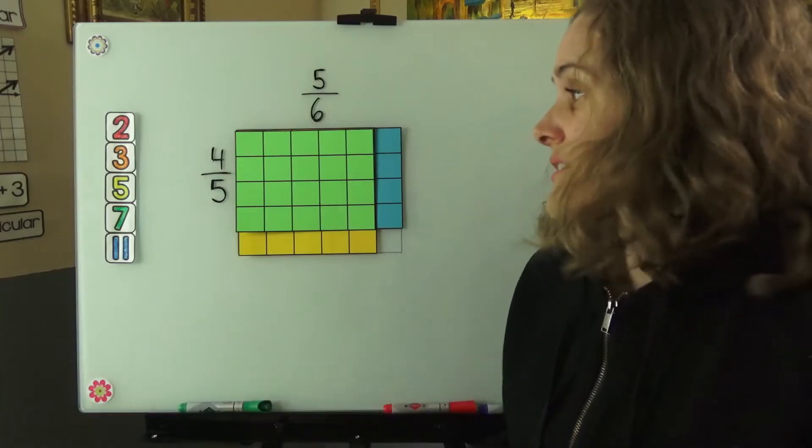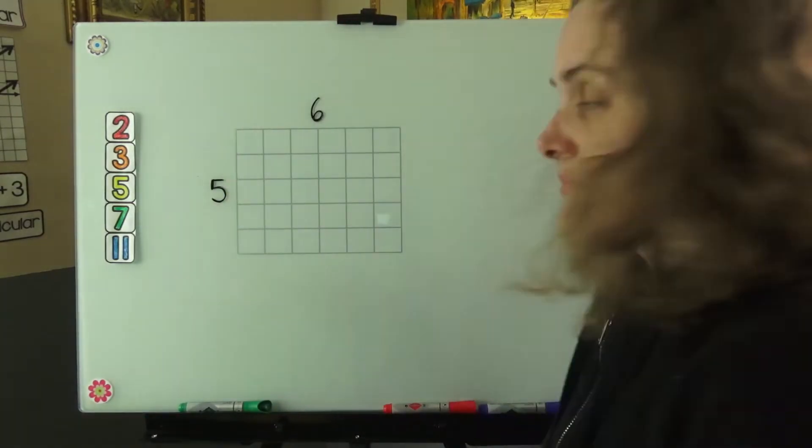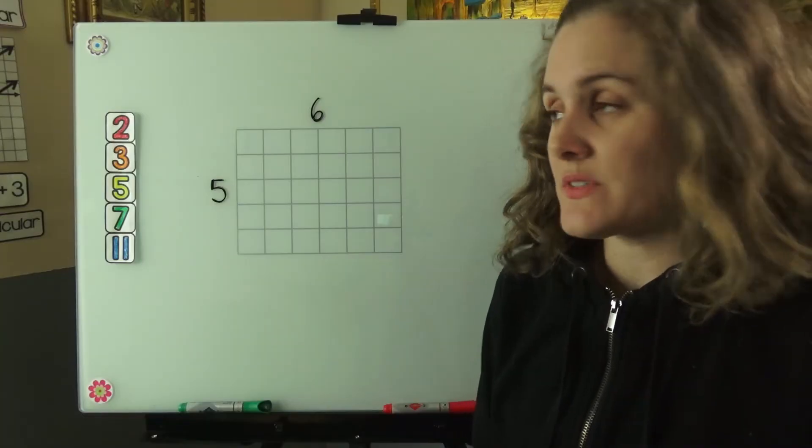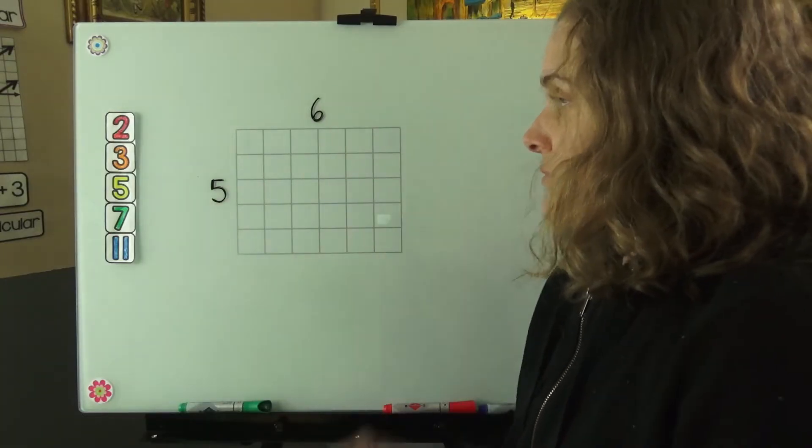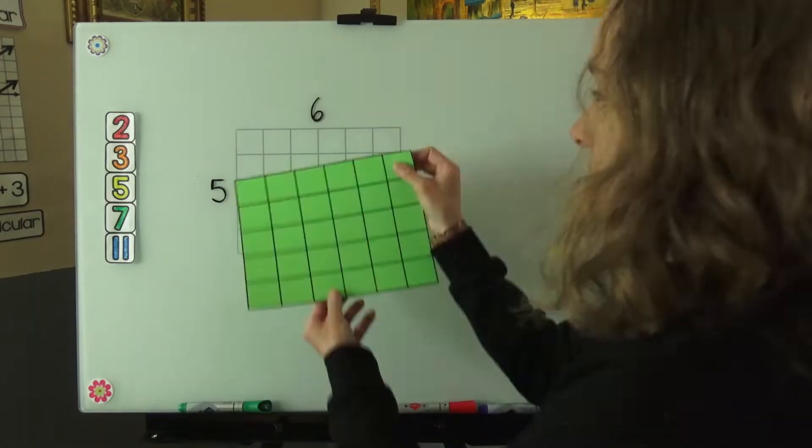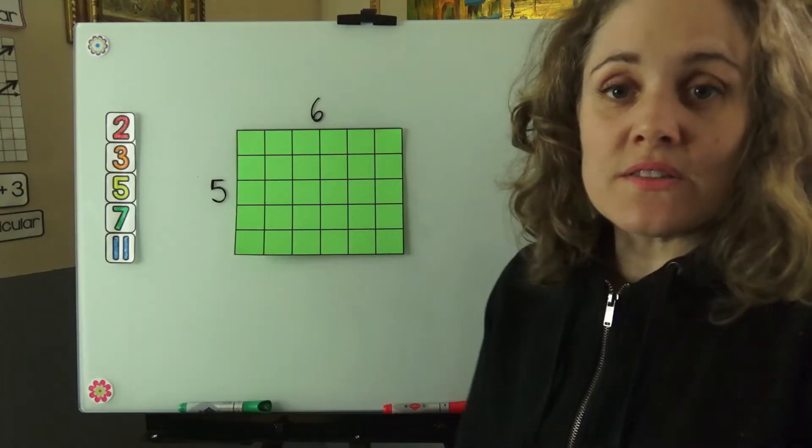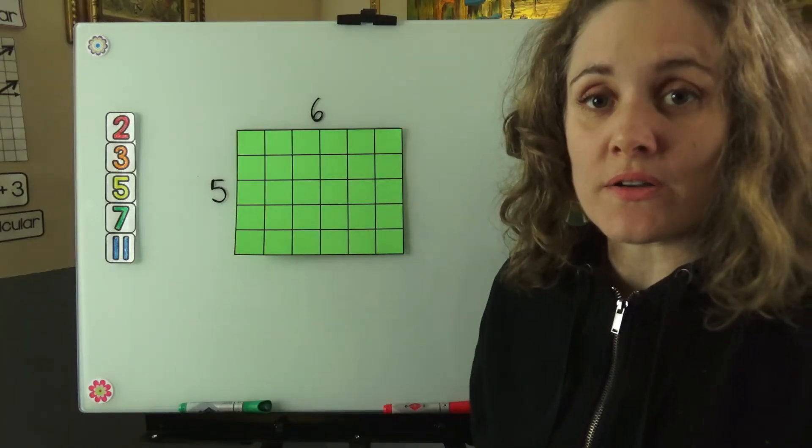Let's wind it back and just look at 5 times 6. If we were just multiplying 5 times 6, we'd have 5 rows times 6 columns. We can think about it that way. And what that would look like is this entire area covered in green. We can see that 5 times 6 is 30, so we have 30 boxes.